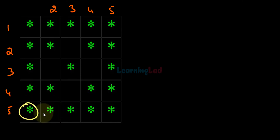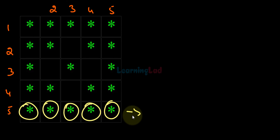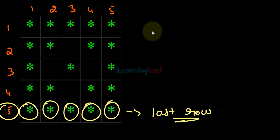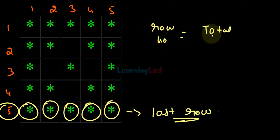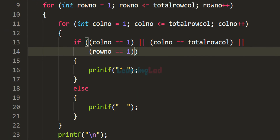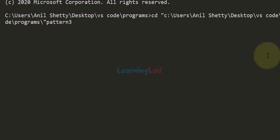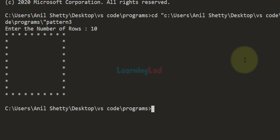In the last row we also display a star in every column. We check this by seeing if row_num == total_row_col, since we start counting from 1. We add that condition using the OR operator as well. Running with 10 rows now gives us the complete square box.